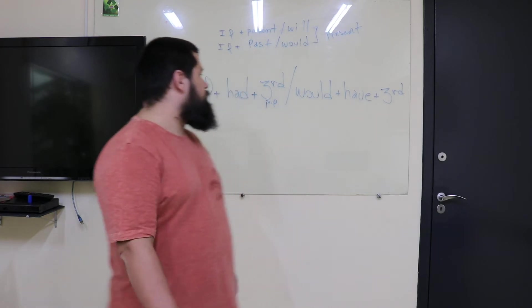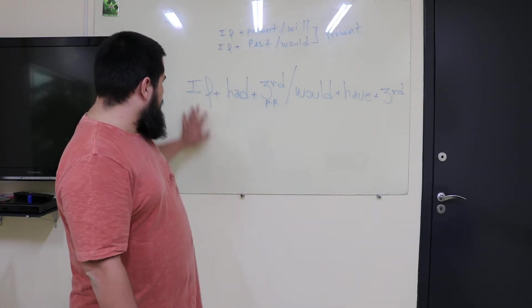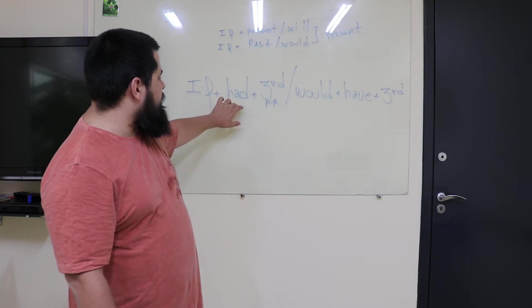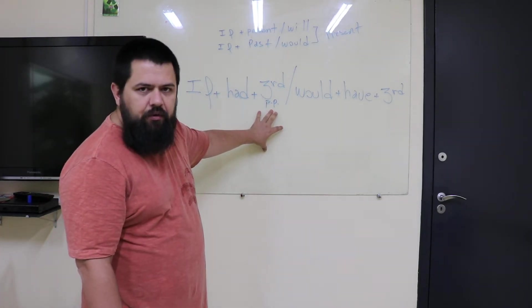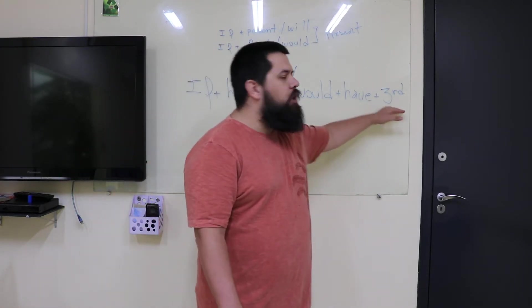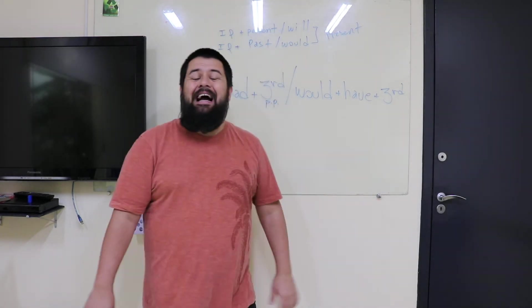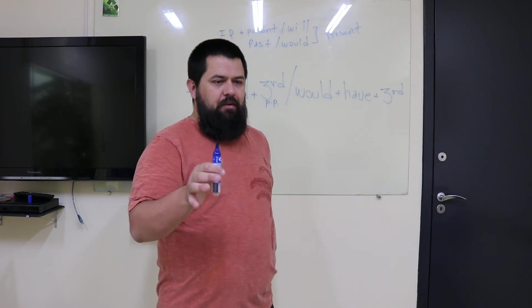By now you already know how to use the third conditional and of course the first and the second. If you haven't, go back to some videos we have there. Okay, so if I had bought that car I would have gone to the beach. I didn't buy the car, I didn't go to the beach in real life.